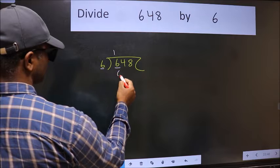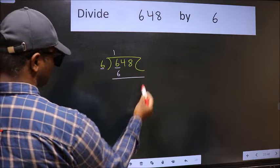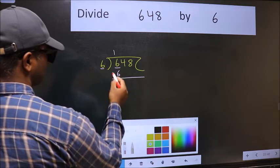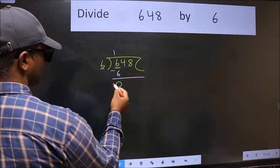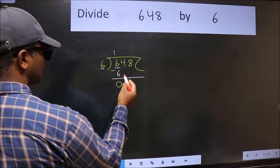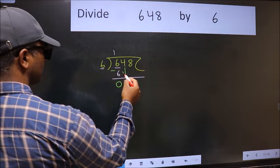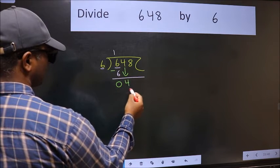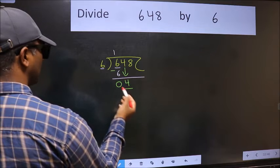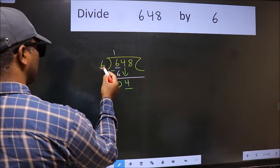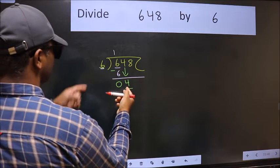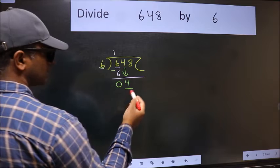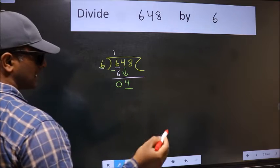6 times 1 is 6. Now we subtract and we get 0. After this, bring down the beside number, which is 4. Now here we have 4 and 6 — 4 is smaller than 6, so we should bring down the next number.